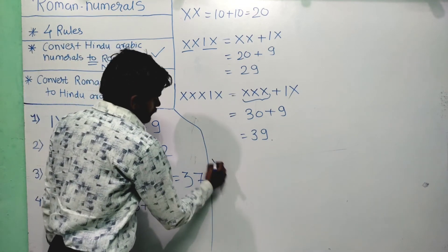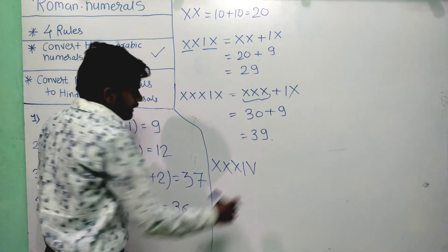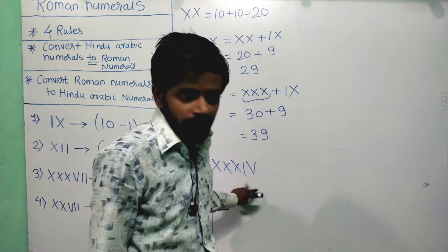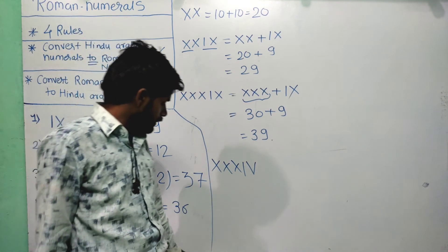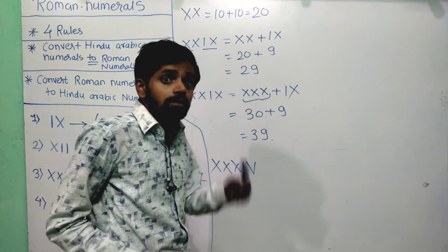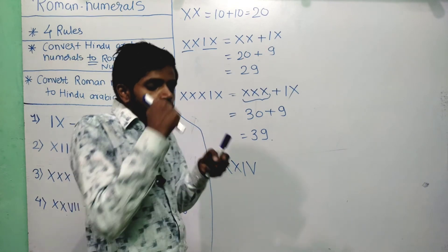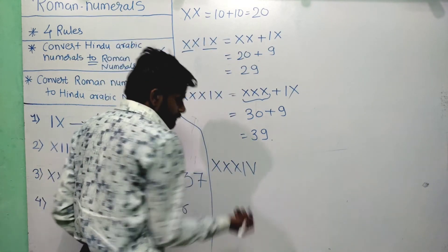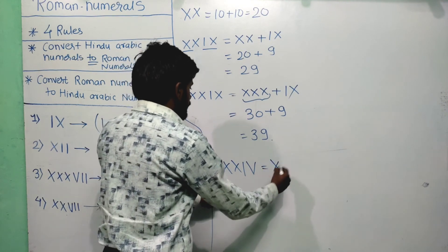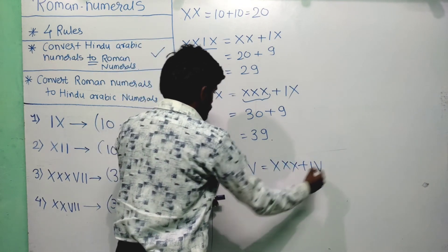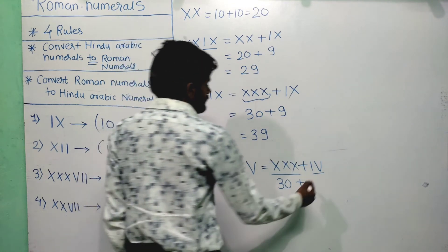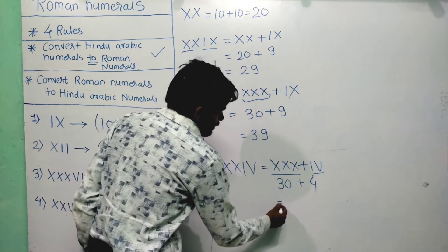For XXXIV: XXX equals 30. Then I is placed between two greater numerals X and V. Apply the fourth rule — take I with the right-hand numeral V: IV equals 4. So XXXIV equals 30 plus 4 equals 34.